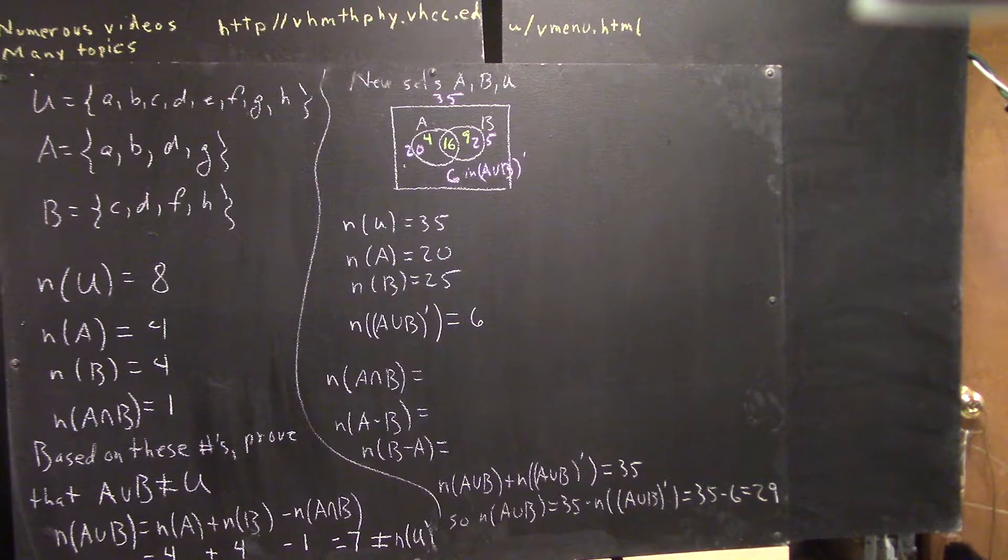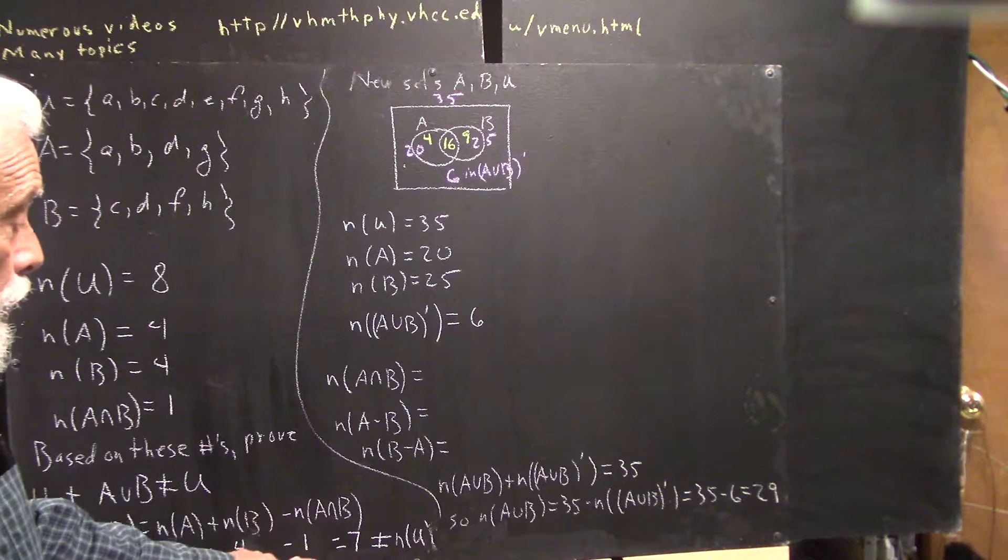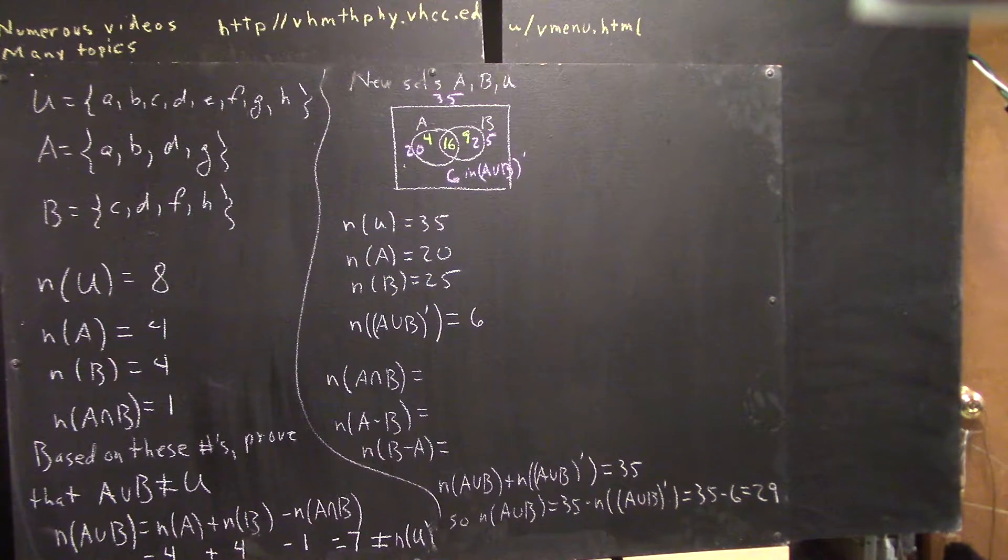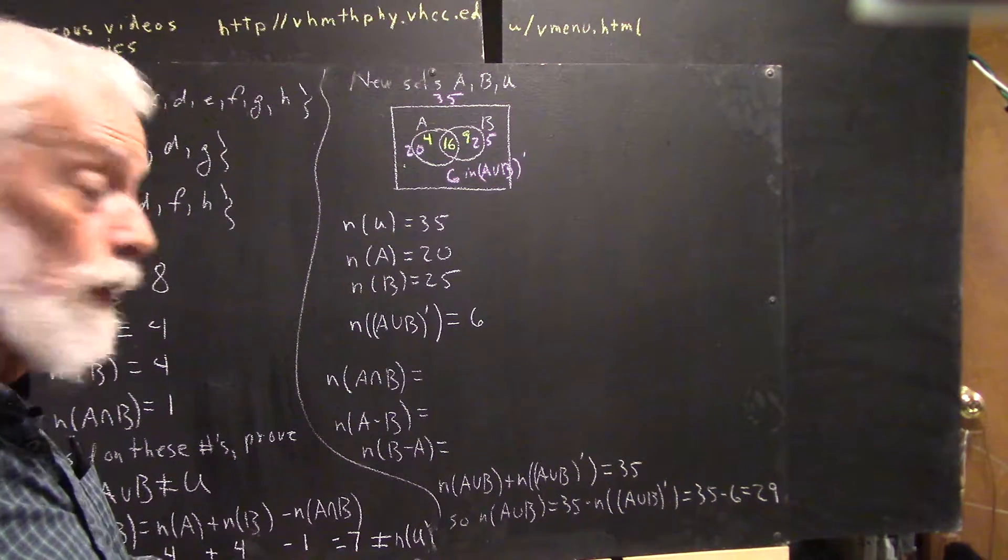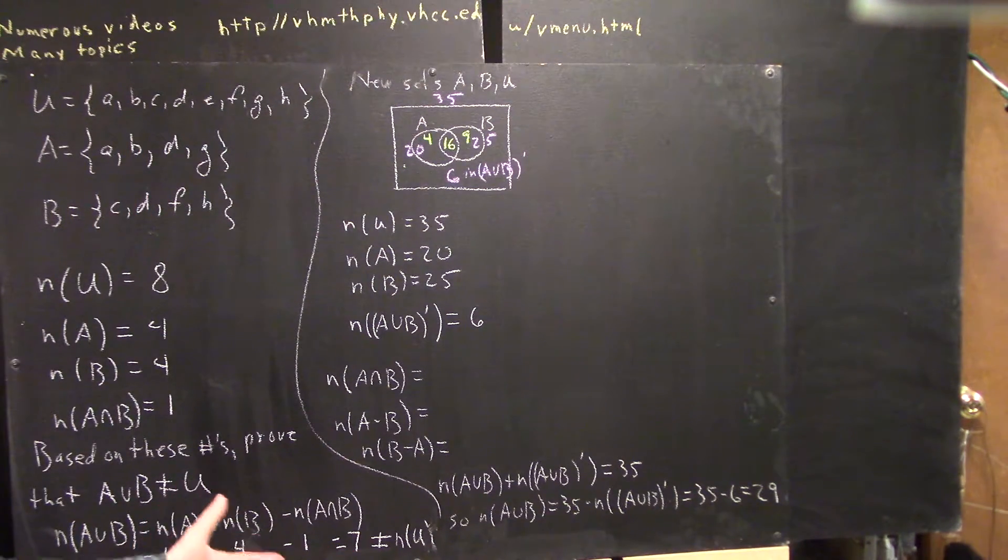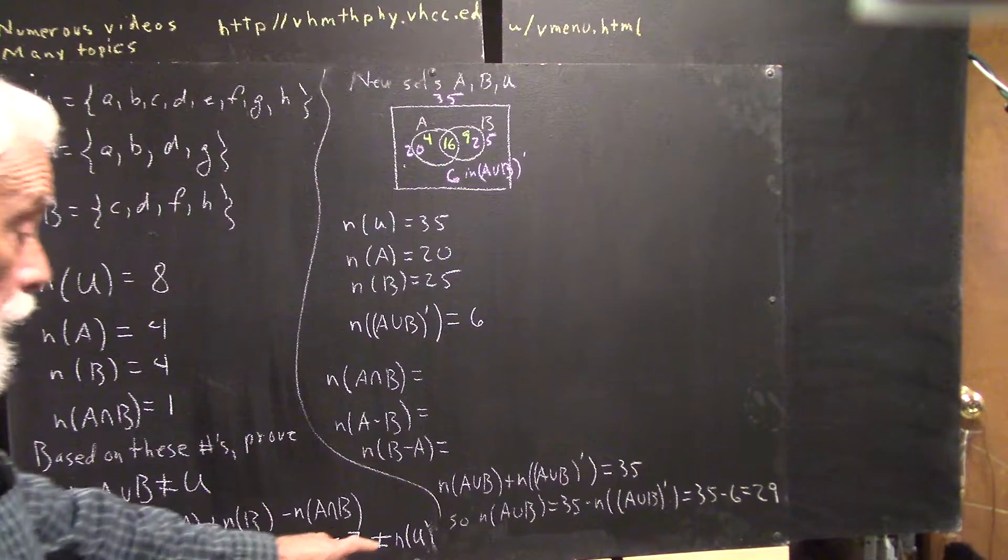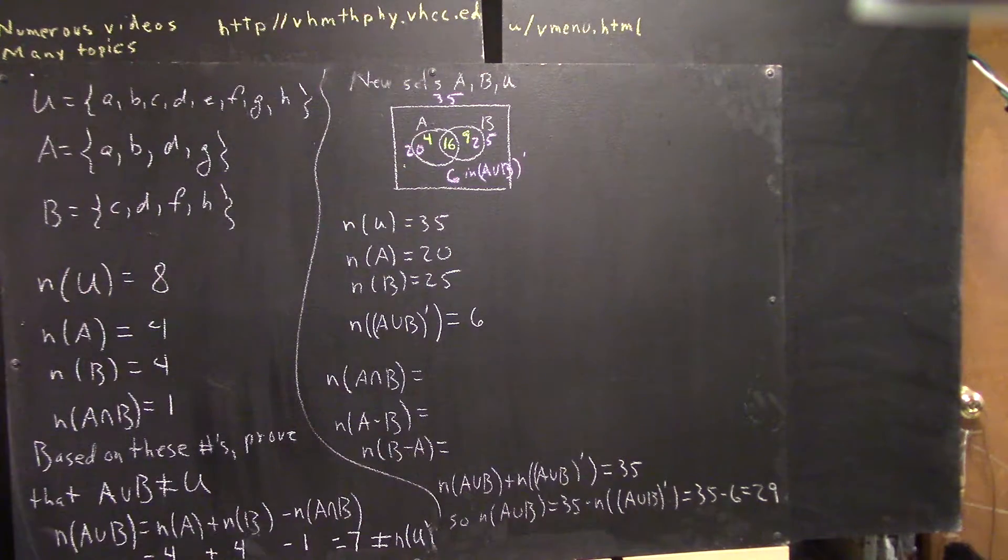So, in this case, there are four elements in A, so the cardinality is four, cardinality of B is four, cardinality of A intersection B is one, and four plus four minus one gives us seven, which is not equal to the cardinality of our universal set.